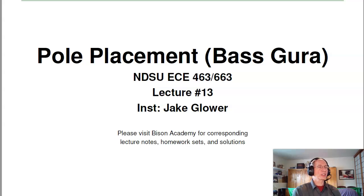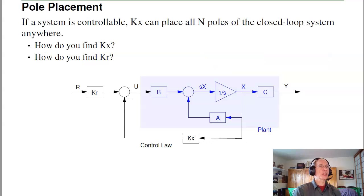Welcome to lecture number 13 for ECE 463 Modern Control, Pole Placement, also known as Bass Gura. The problem we're looking at in this lecture is how do I find my full state feedback gains to place the poles in the closed loop system, and how do I find the Kr to set the DC gain?